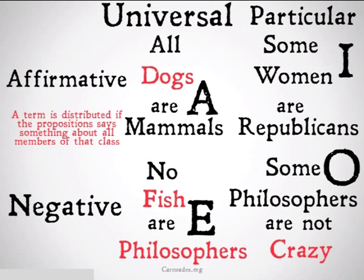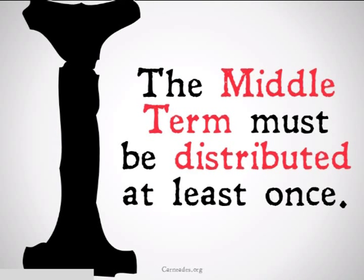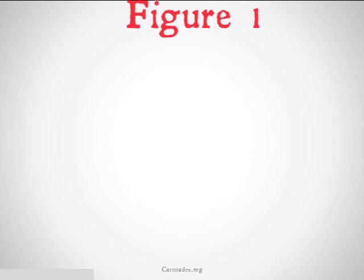The terms highlighted in red are those that are distributed. Rule number one is that the middle term of a categorical syllogism has to be distributed at least once. Let's take a look at some examples.